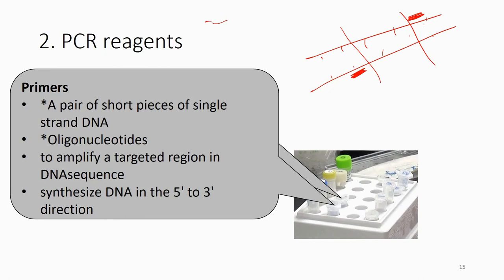This is also what we call the oligonucleotides. The main purpose is to amplify the target region and they synthesize DNA from 5 prime to 3 prime.